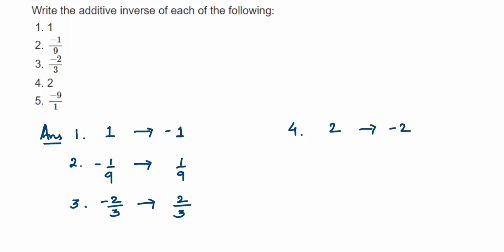And the last one, it's minus 9 by 1. So you can keep minus 9 by 1, or you can simply write minus 9. So additive inverse will be equal to 9 by 1, or you can just simply write down 9.